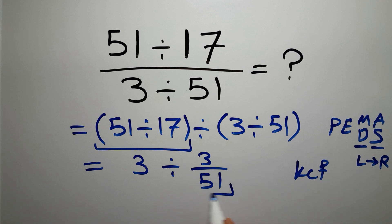Keep the first fraction, 3. Change division to multiplication, and flip the second fraction: 51 over 3.